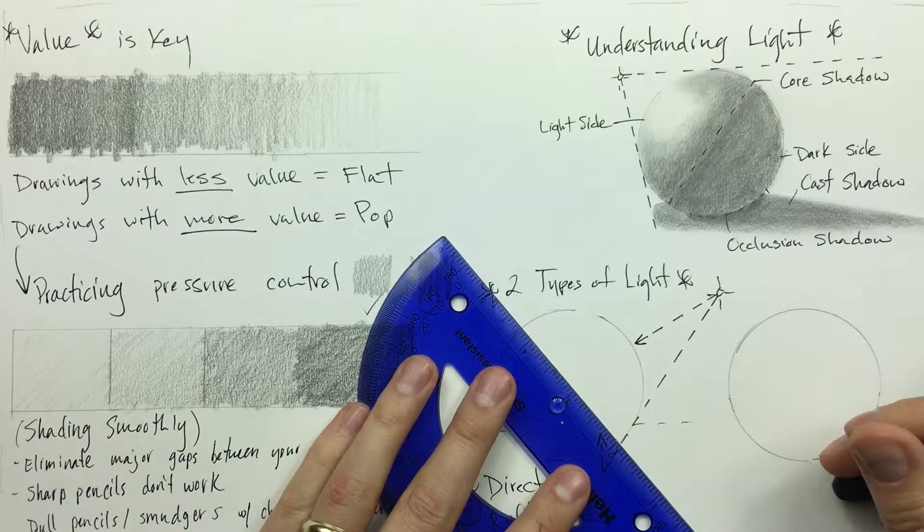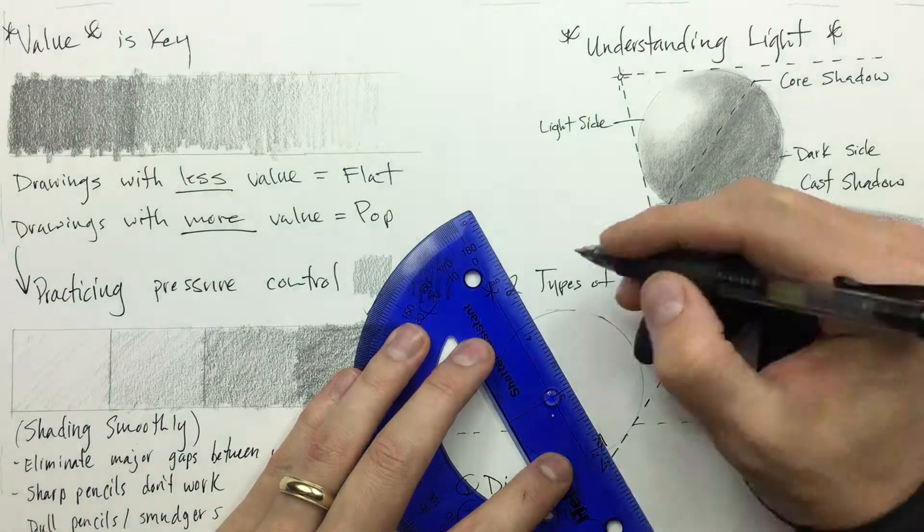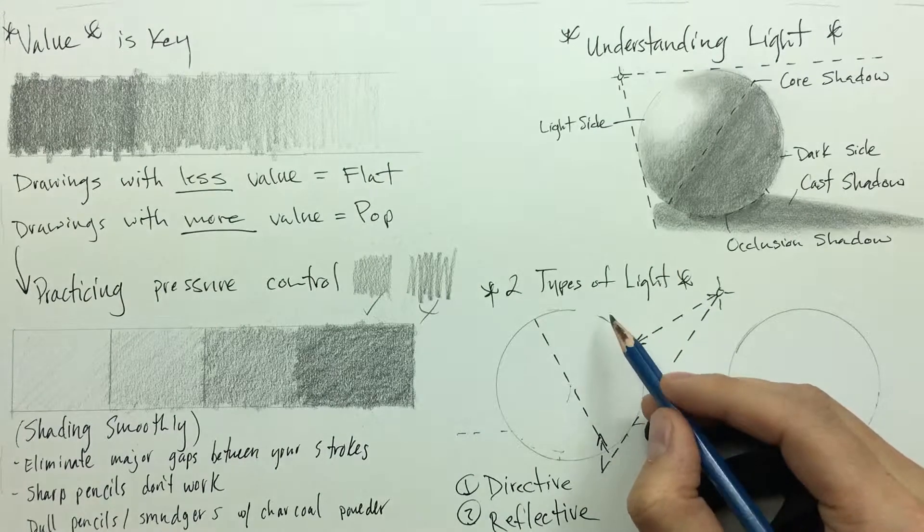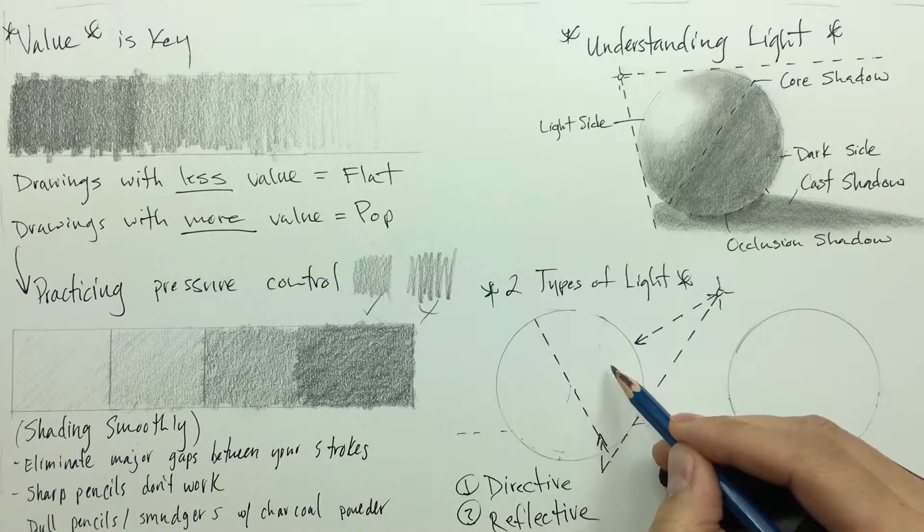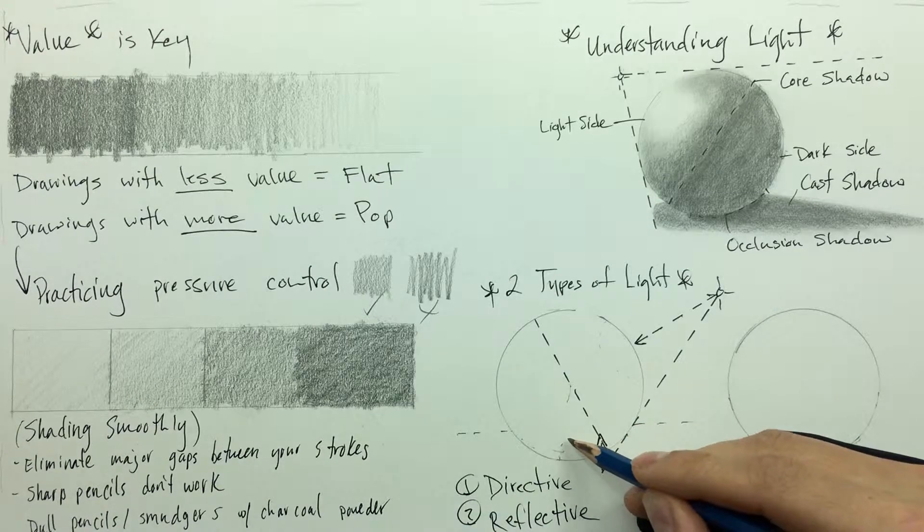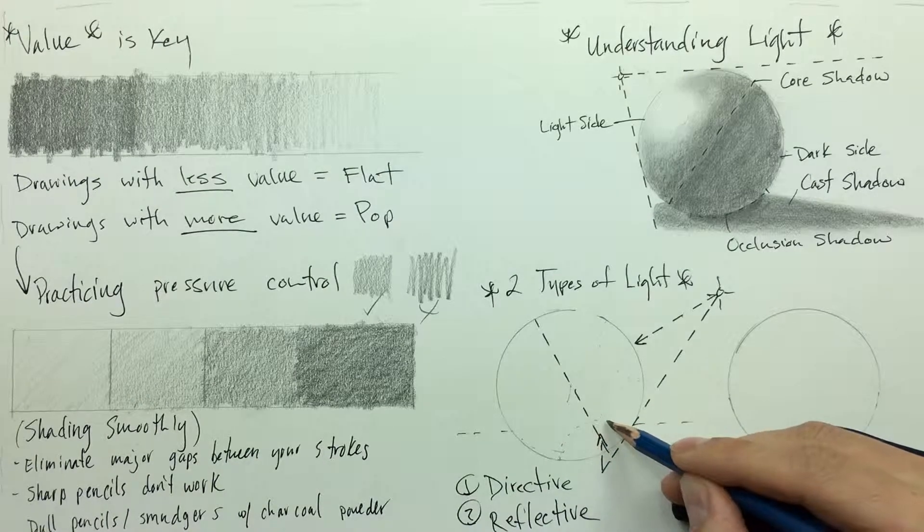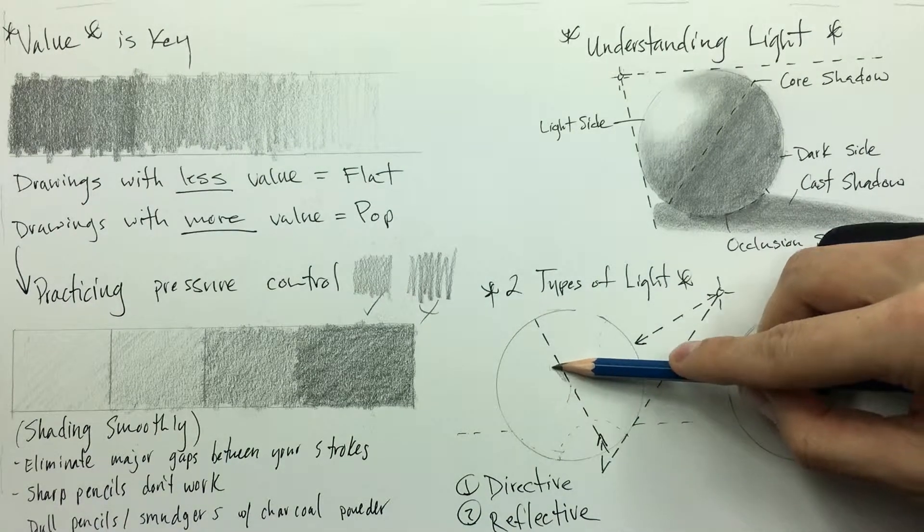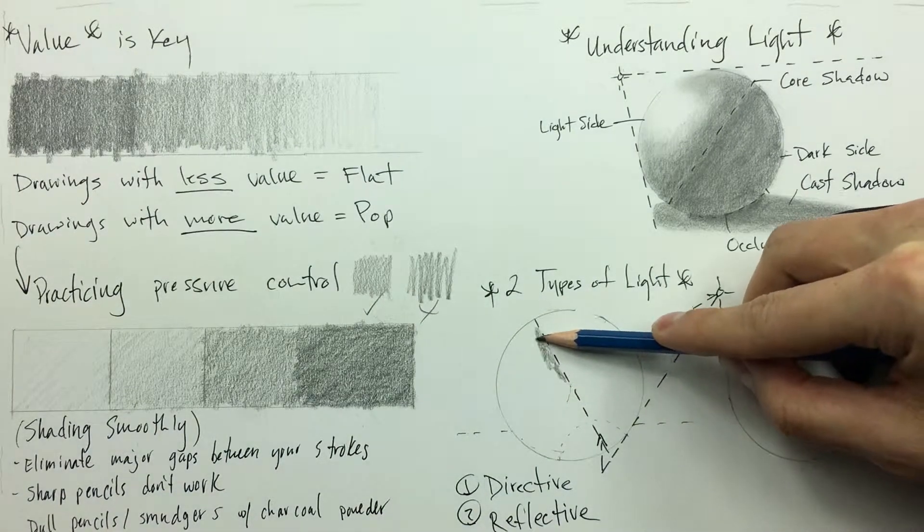So of course we have our equator line, or as I like to call it, the reference for our core shadow line. Then one of the little tricks that I like to do is I like to draw a little half sphere where I know the light is going to be predominantly hitting the circle. That's my personal preference there—you don't have to do that if you don't want to. It's just something that I found works for me.